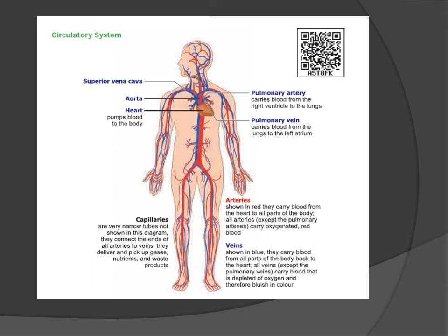In the circulatory system, the superior vena cava brings blood to the heart which pumps blood to the body. Capillaries are very narrow tubes that connect the ends of all arteries to veins, delivering and picking up gases, nutrients and waste products. The pulmonary artery carries blood from the right ventricle to the lungs. Pulmonary veins carry blood from the lungs to the left atrium. Arteries (shown in red) carry oxygenated blood from the heart to all parts of the body, except the pulmonary arteries. Veins (shown in blue) carry blood from all parts of the body back to the heart; except the pulmonary veins, all veins carry blood depleted of oxygen and are therefore bluish in color.